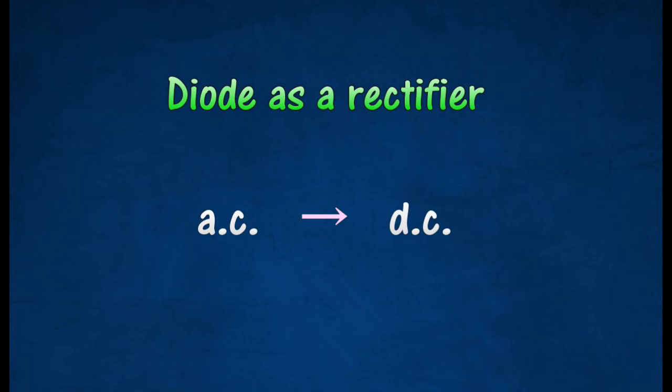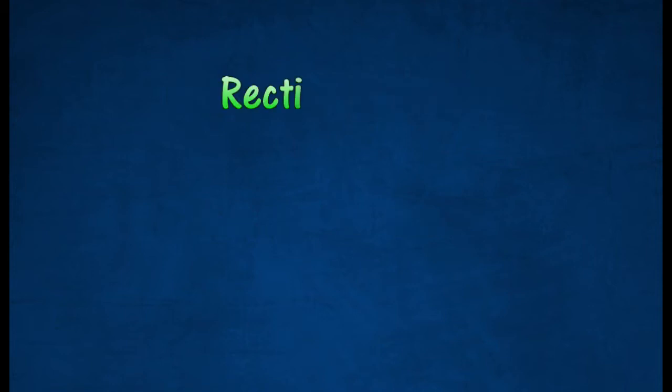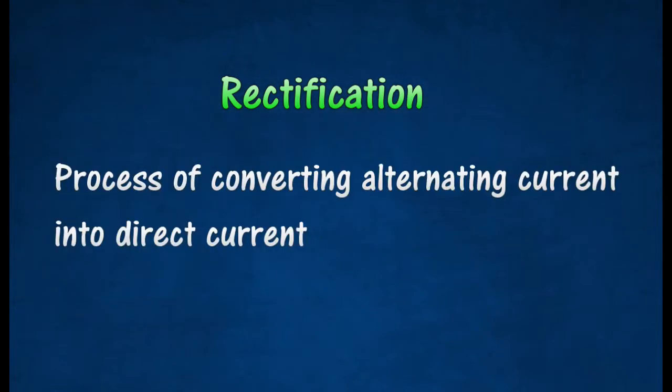Diode as a Rectifier. In a diode, electrical current can be made to flow in one direction only. If the diode is reversed, the flow of current is stopped. Thus, a diode can act as a rectifier to convert alternating current to direct current. The process of converting alternating current into direct current is called rectification.